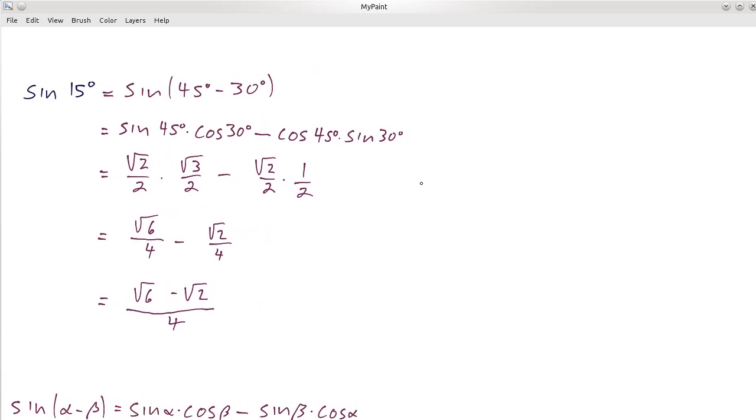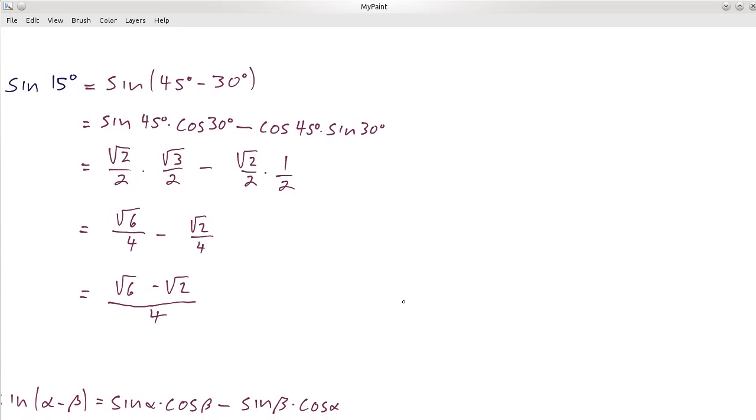Now, I said there's another way to do this as well. What we could do, instead of using the difference formula, we could write sine of 15 degrees as half an angle we know. Because if we doubled 15 degrees, we would get 30. So this is the same as sine of 30 degrees divided by 2.